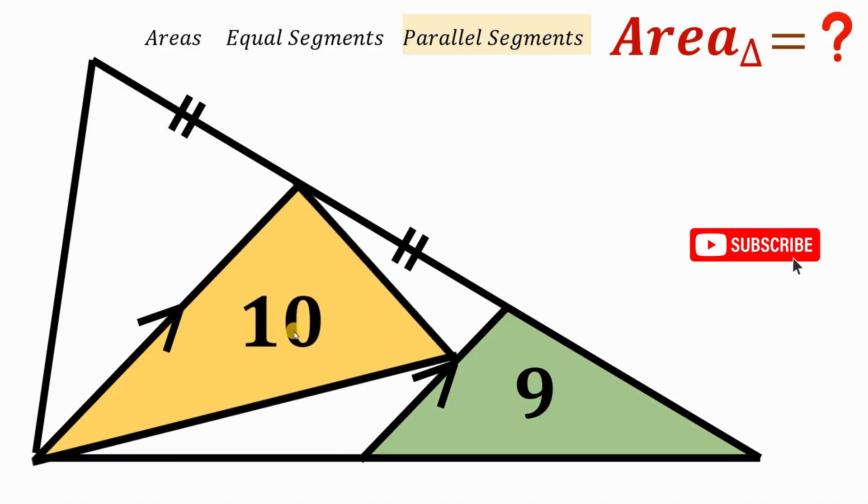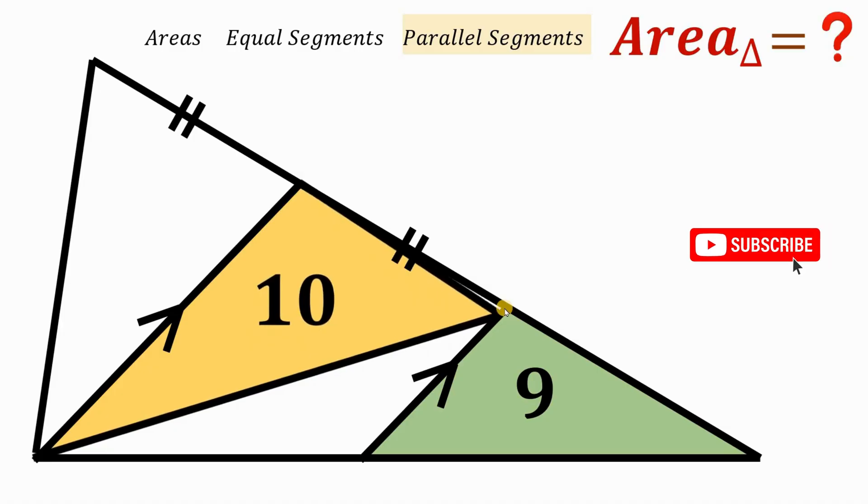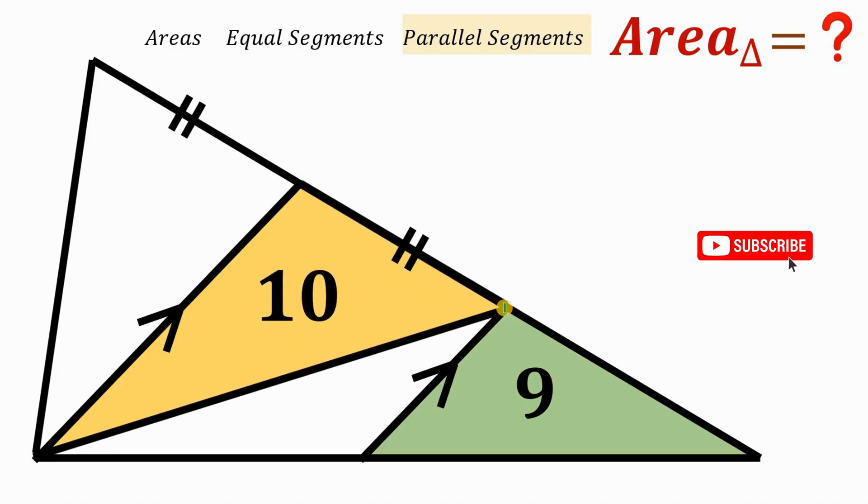Now, if we put this triangle in this position, the area is still 10. But let's move this point, this end point to this point on the top like this. Now, we are now using parallel segments.